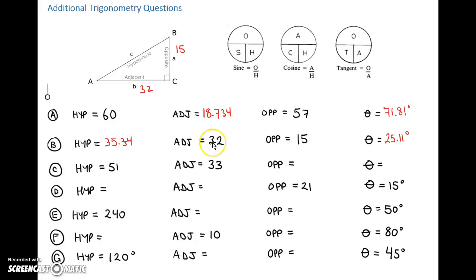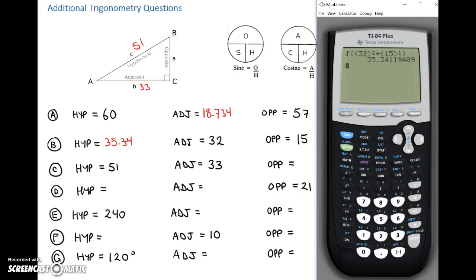We can see that this opposite value is small compared to the adjacent. So as soon as we have a smaller opposite compared to the adjacent, the hypotenuse is going to be closer to that adjacent at 32. Now that you know the ratios, you can fly through these. Adjacent is 33, hypotenuse is 51. Let's start with the angle — adjacent and hypotenuse means cosine is a good way to go. We're looking for the angle, so we'll use inverse cos. Cos is adjacent 33 divided by hypotenuse 51. That gives us 49.679, so we'll do 49.68 degrees.